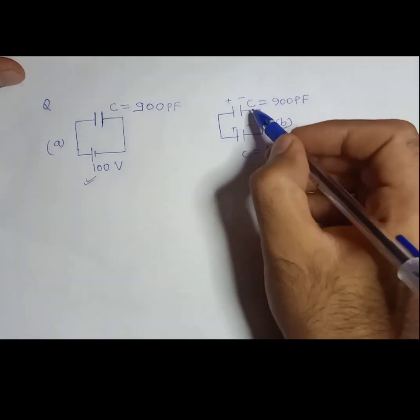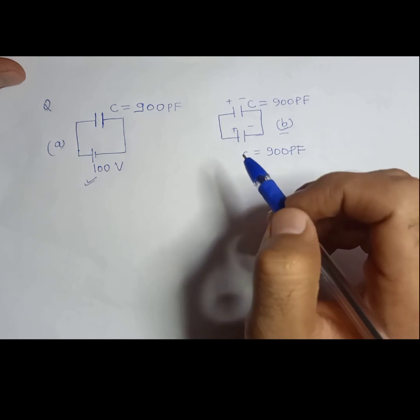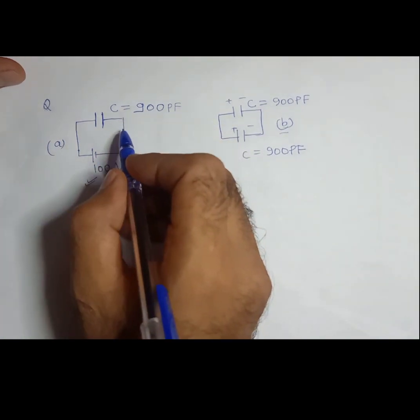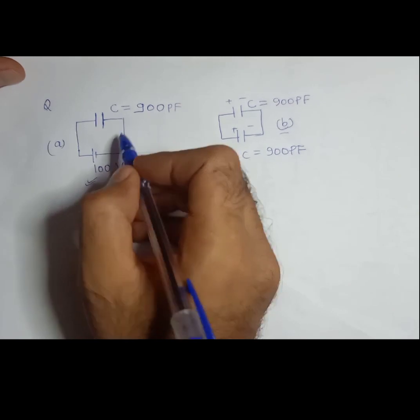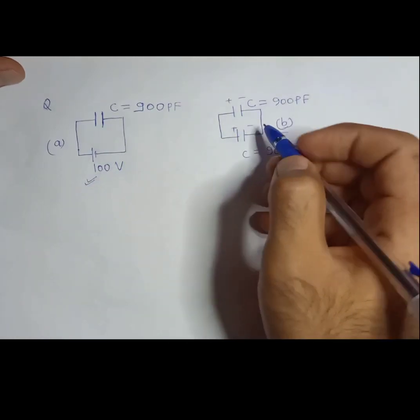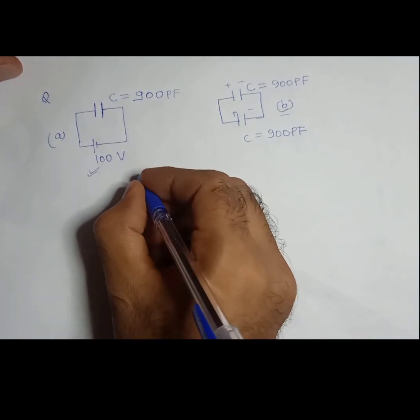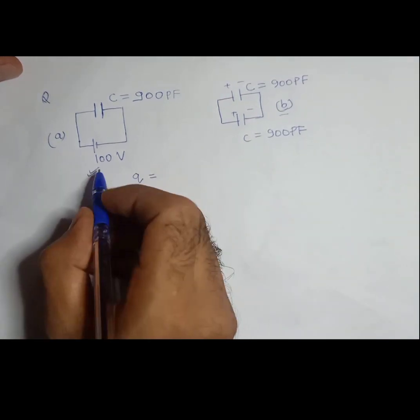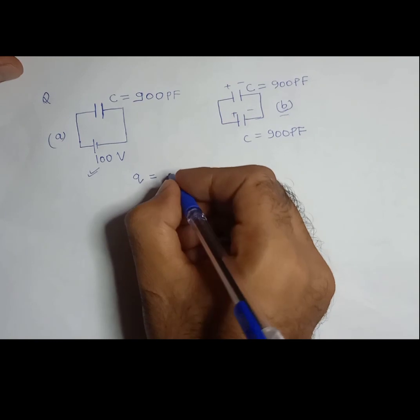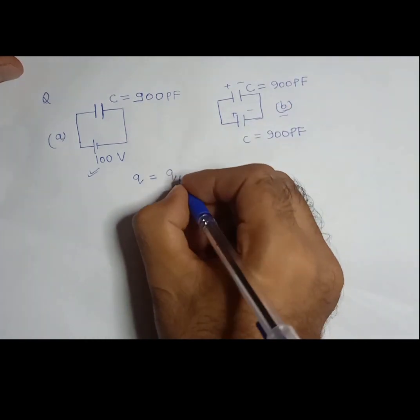So as you can see, this capacitor in the system B is not being used initially, okay? So whatever charge is there is going to be same in this system B, right?